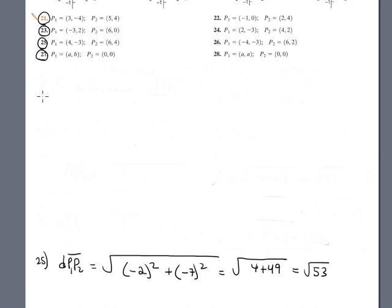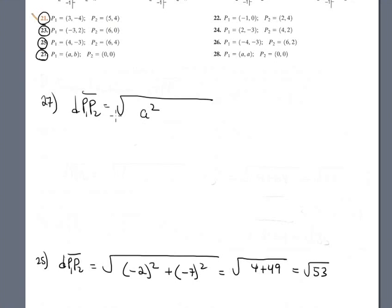Problem 27 is easy — it uses just letters. Distance between P1 and P2 segment S equals square root. You subtract A minus 0, which is A squared, and B minus 0, which is B squared. So the answer is square root of A² plus B². Super elementary.